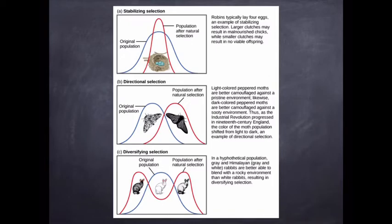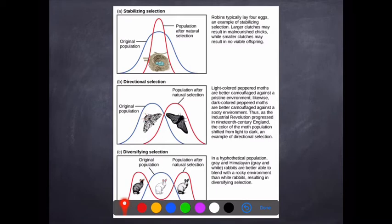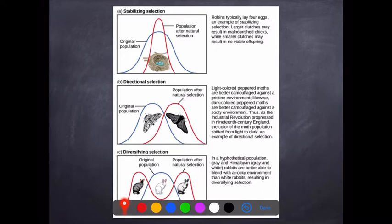With directional selection, you're looking at continuous variation where one end is selected against — not both ends, just one. The peppered moth is a classic example. The original population had light, medium, and dark versions. During the industrial revolution, soot from factory pollution darkened tree bark, so lighter moths were no longer camouflaged and could be predated upon. With the result, the whole curve shifted to the right. In the new population you still have lighter, darker, and very dark versions — there is still variation — but it has shifted towards the darker end of the spectrum.